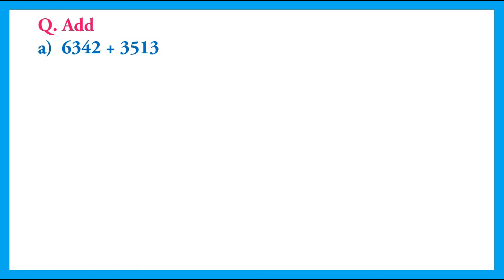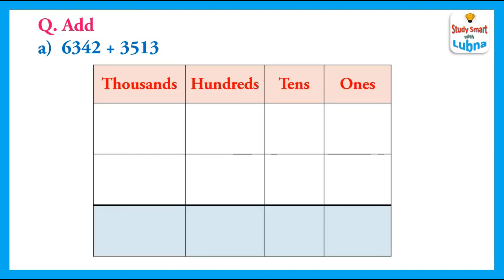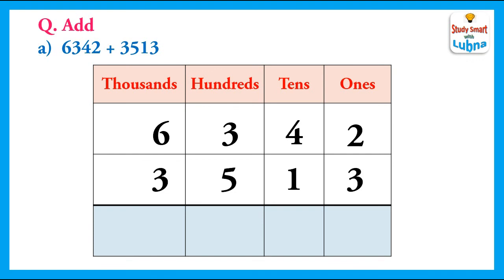Another question. In this question, we have to add 6342 and 3513. We will write these 4-digit numbers below their place values. So, we will write 6342, then we write 3513. After this, we will add them. We will add the ones. 2 plus 3 equal to 5. We write 5 in the ones column.